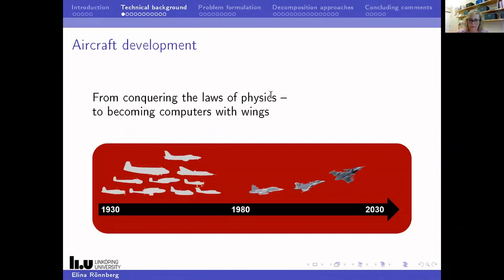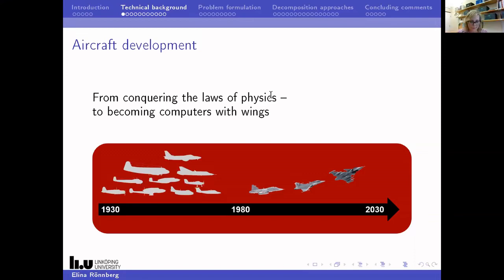During this time, aircraft were mainly mechanical machines. But with digital systems and more software functionality, the design principles and requirements have changed over time. Now you can make changes by changing your software functionality, not the whole aircraft. The new designs create a new need for coordinating the resources in the systems, and this is where optimization becomes useful.